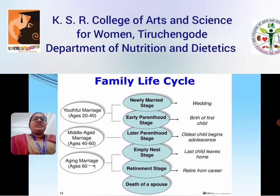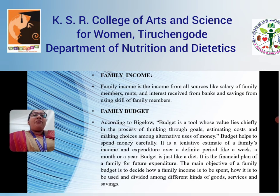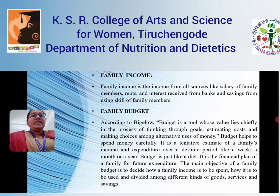After that comes the death of a spouse, which is the end of the family life cycle. Family income is the income from all resources like salary from the family members, rents and interest received from banks, and savings using the skills of family members.